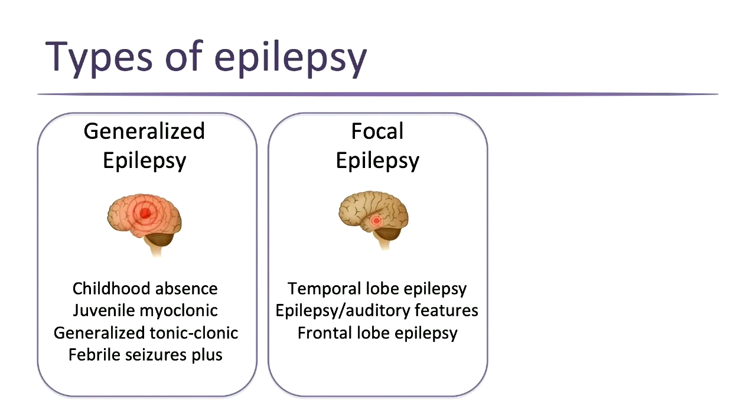Focal epilepsy is characterized by seizures where you can pinpoint a spot in the brain where the seizure starts and usually stays. Common forms include temporal lobe epilepsy, which is one of the most common. There are other rarer familial forms like epilepsy with auditory features — where you hear things when the seizure happens — and frontal lobe epilepsy, where seizures happen in the front of the brain.